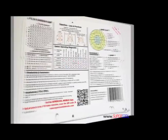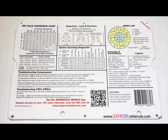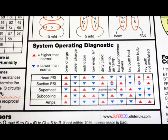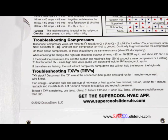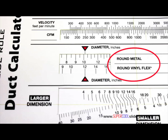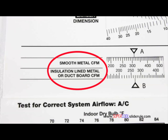The back cover contains required formulas, capacitor rules and practices, a wet bulb conversion chart, how to perform computations on series or parallel circuits, an electric heat strip guide, a complete system troubleshooting diagnostic chart, and how to troubleshoot compressors and TXV. Inside is packed with even more information. It performs sizing of both metal and flexible duct, and has the only direct reading conversion from smooth metal to insulation-lined metal we've ever seen.